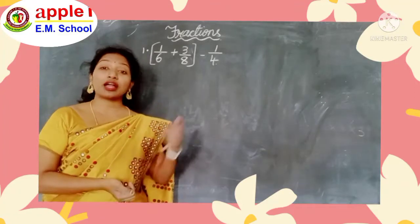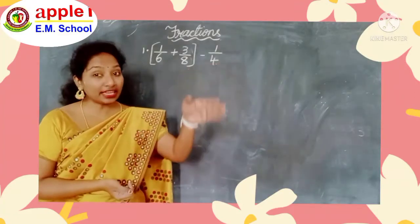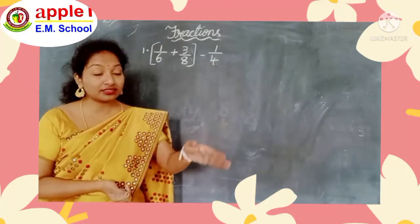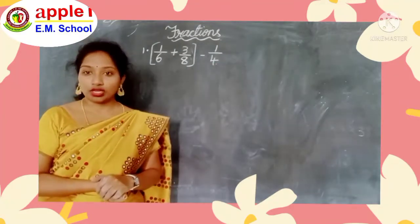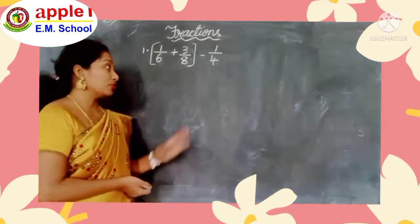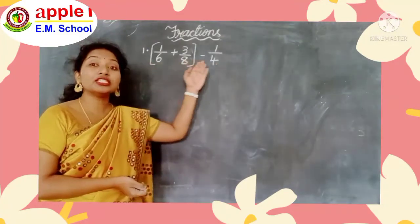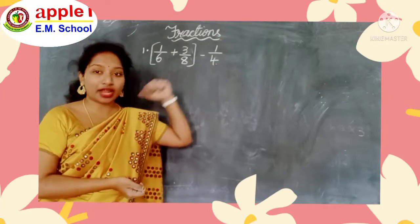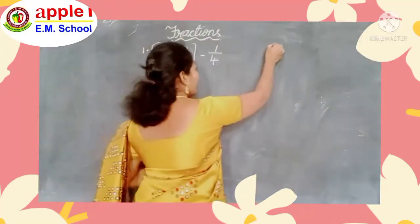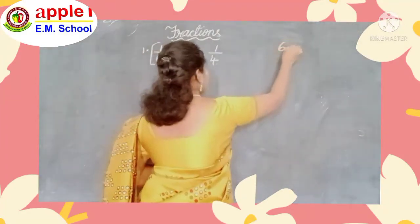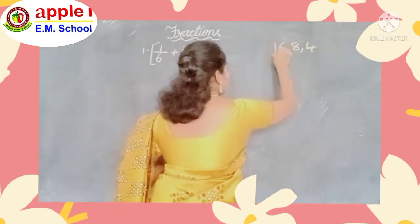First, we have to convert these unlike fractions to like fractions. Then we have to do the simplification. So first, find the LCM for the denominators of the given fractions. What is the LCM for the denominators 6, 8, and 4?